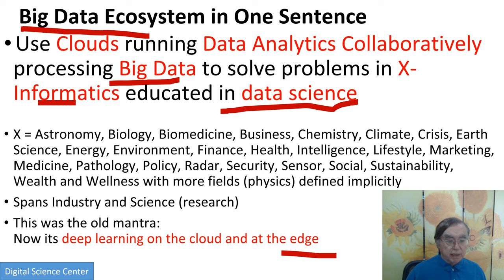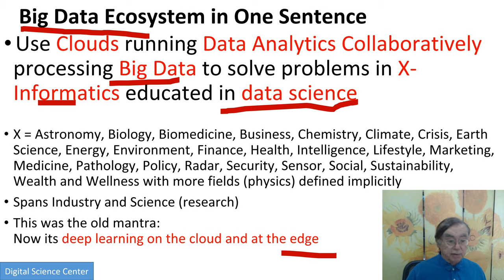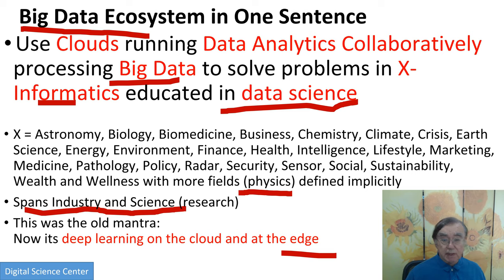I went online and tried to find how many informatics fields there were, and I identified all these ones available online: informatics in astronomy, biology, biomedicine, business, chemistry, climate, crisis, earth science, energy, environment, finance, health, intelligence informatics, lifestyle informatics, marketing informatics, medicine informatics, pathology informatics, policy informatics, radar informatics, security informatics, sensor informatics, social informatics, sustainability informatics, and wellness informatics. And there are fields I never found defined, like physics — obviously physics is doing informatics when you analyze the Higgs boson. This spans industry and science, so we weren't so far off in 2013.